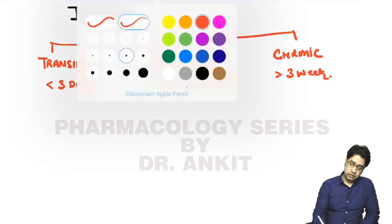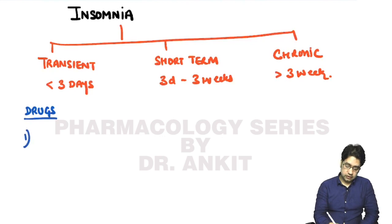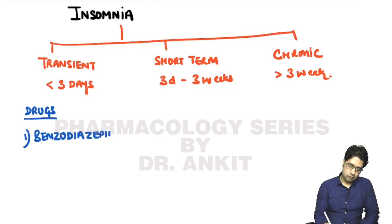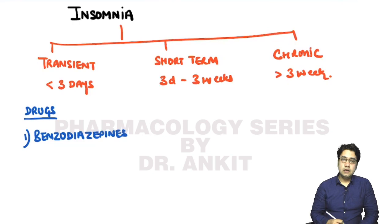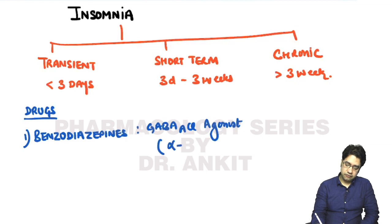Let us write the drugs used for the treatment of insomnia. The first class of drugs are benzodiazepines. Benzodiazepines act as GABA-A chloride channel agonists, acting at the alpha-gamma subunit of this receptor.